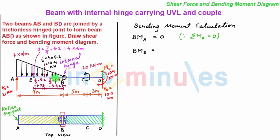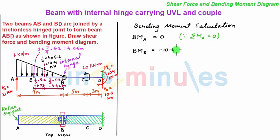So the intensity of force will be the area of this triangle, whose magnitude will be given as half into 4 multiplied by 5.2, and its value comes out to be 10.4 kN. This force acts at a distance of 1/3 of the span — 5.2 meters from point E and 2/3 of the span from point P. So the clockwise moment will be force multiplied by distance: minus 10.4 kN multiplied by the distance 1.73 meters.